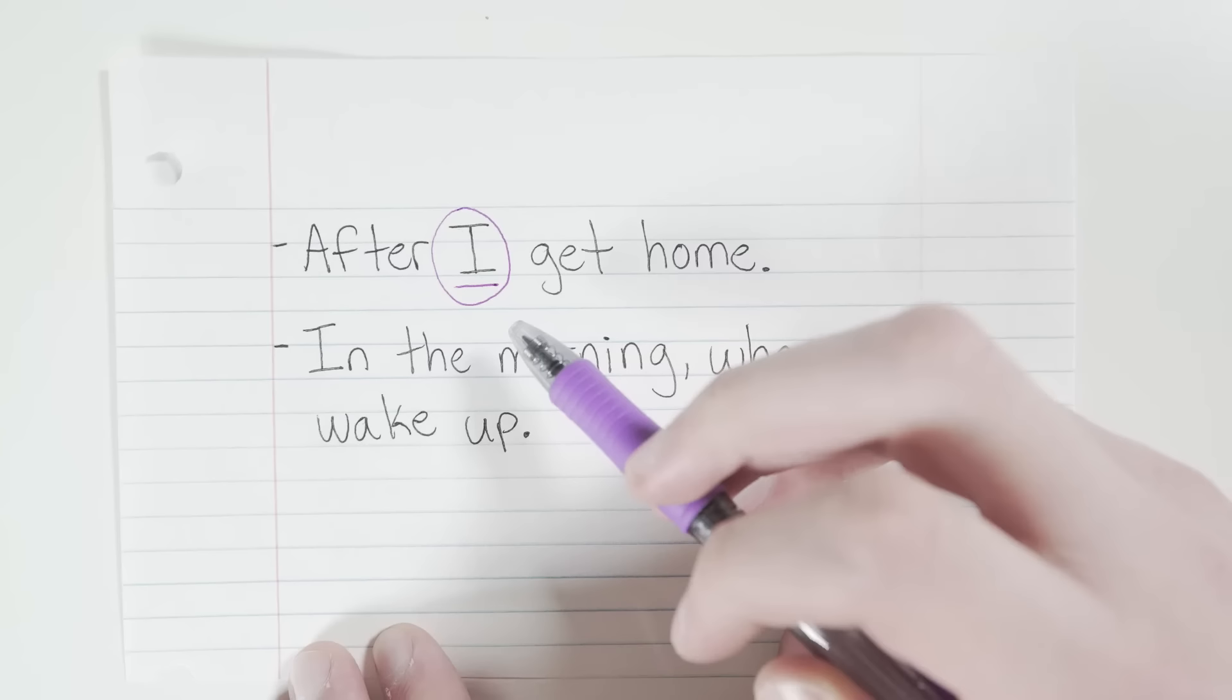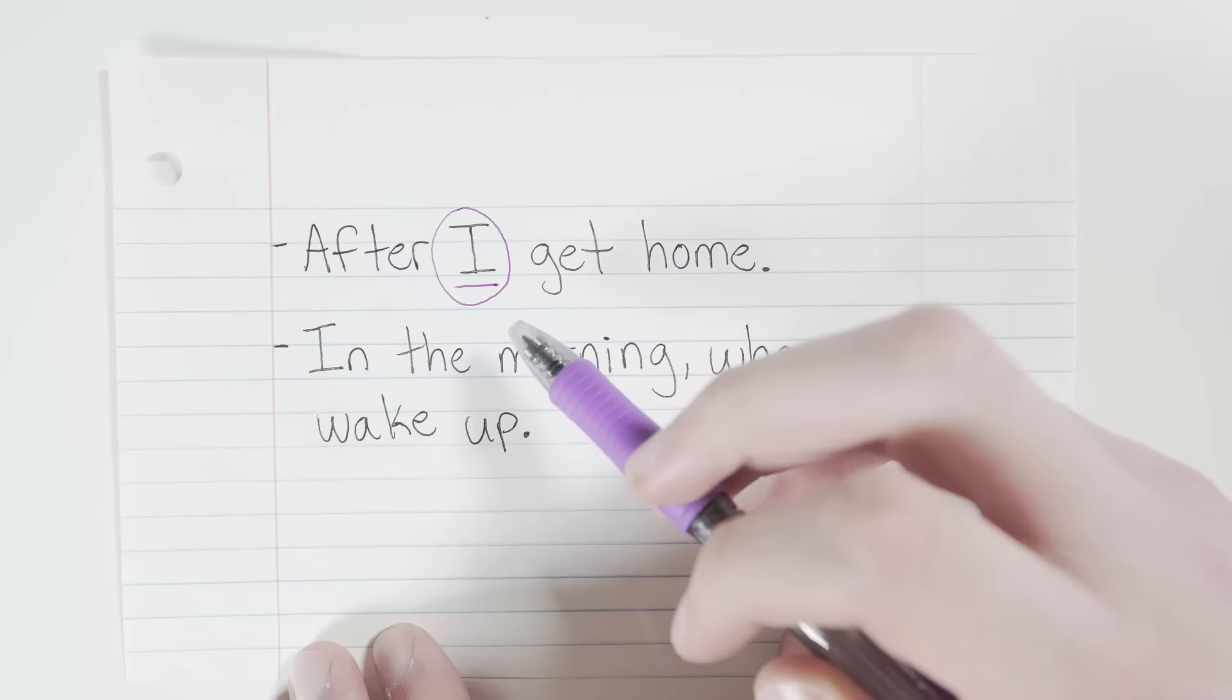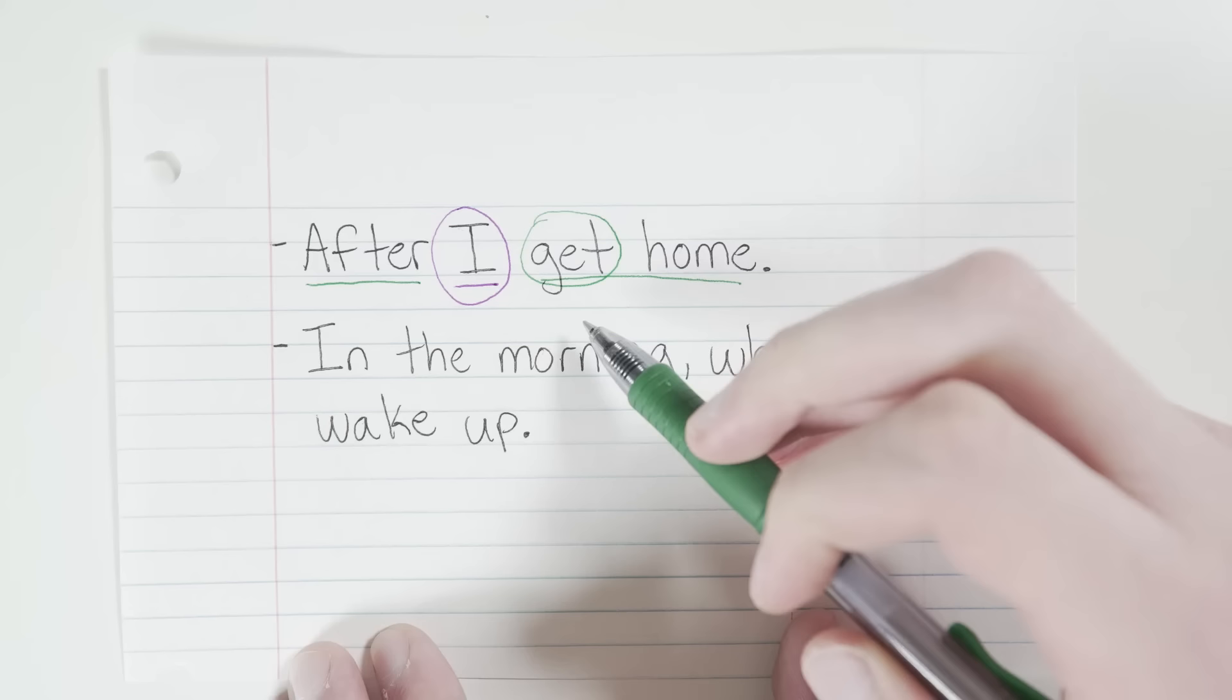So let's take a look at some fragments. After I get home. Okay, so you might say, well, we have a subject in I and a predicate in get, right? So isn't that a sentence? Well, no, it's not. Because there's not a complete idea here, not a complete thought. After I get home, what? After I get home, I'll take a nap? After I get home, I'll watch some TV? There's not enough information here, as it stands, for me to really understand what's going on. And because of that, this is a fragment.